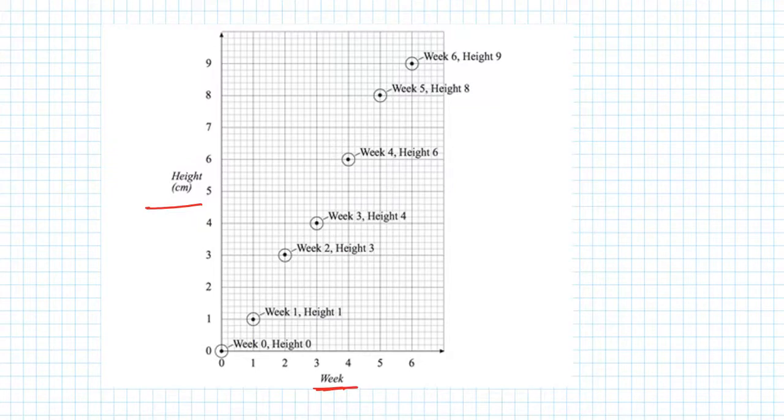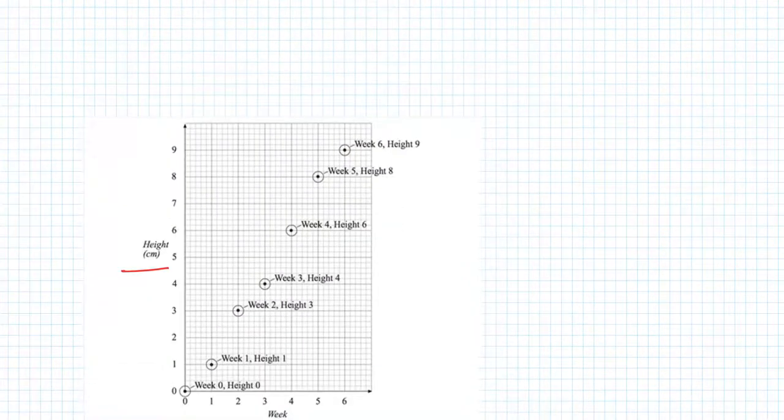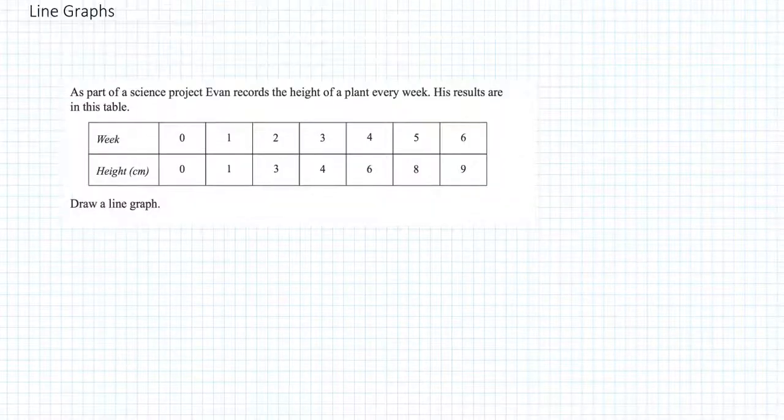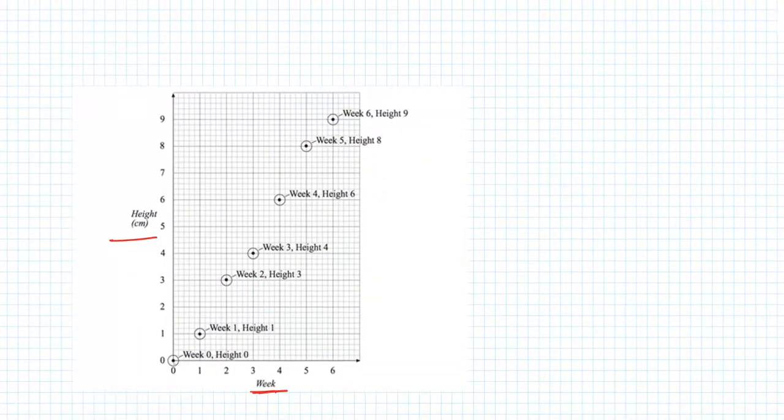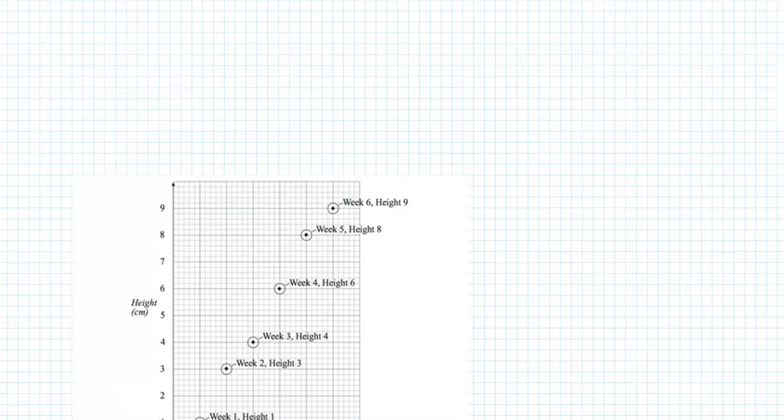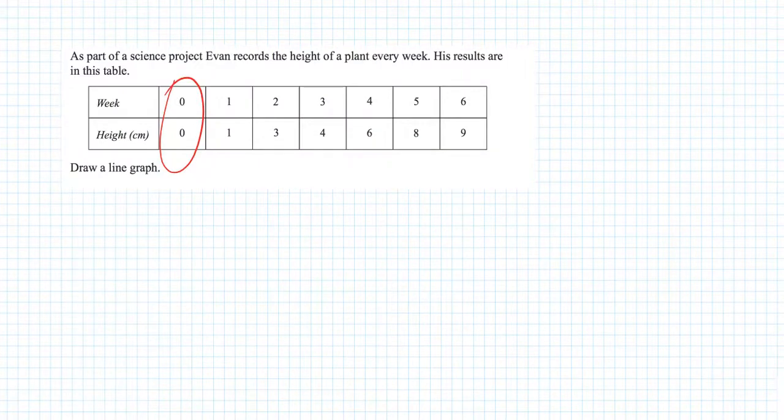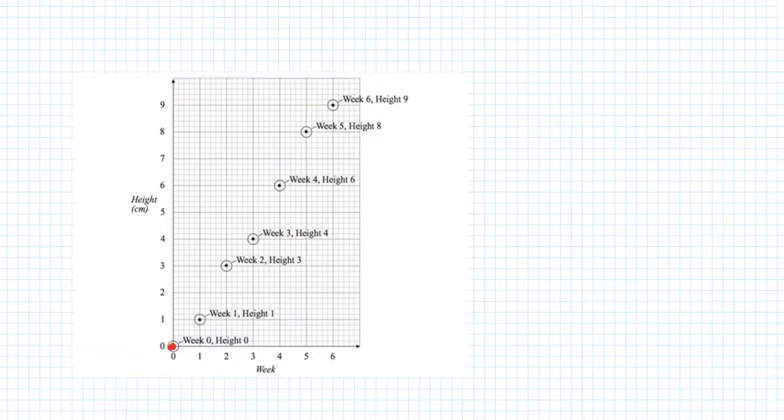Now then these points were generated by plotting these matching pairs. For example the first one zero zero had zero on the weeks and zero in the height and that's why it is there and it's been labeled for us as well. If we carry on, the next one one one, well the week was one and the height was one. That represents that point there.